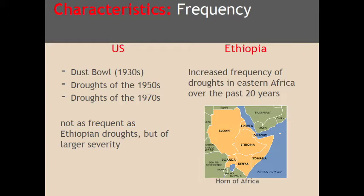In the Horn of Africa, the region in which Ethiopia is found, there has been an increase in frequency of droughts over the past 20 years. This area is much more prone to droughts due to the arid and semi-arid climates, and the Horn of Africa is expected to experience droughts at least once or twice per year.